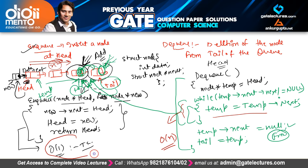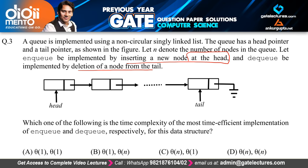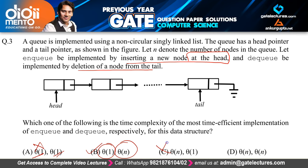Therefore, the enqueue operation takes O(1) time complexity and the dequeue operation takes Θ(N) time complexity. Option A is wrong because it says both are Θ(1). Option B is correct because enqueue is Θ(1) and dequeue is Θ(N). Option C is wrong because it reverses these. Option D is also wrong. So the correct answer is option B.